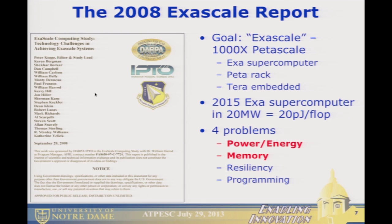The Exascale project's goal was not exaflops per se, but exascale: a thousand times more computation in the same volume as petascale. That meant an exascale supercomputer, a petascale rack, and a terascale device you could embed in a cell phone. The goal set by DARPA in 2008 — and you've heard this number over and over — was 20 megawatts, which works out to 20 picojoules per flop executed. The four problem areas included energy/power and memory, which I'm going to focus on.